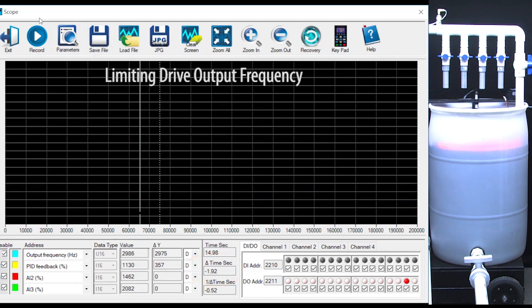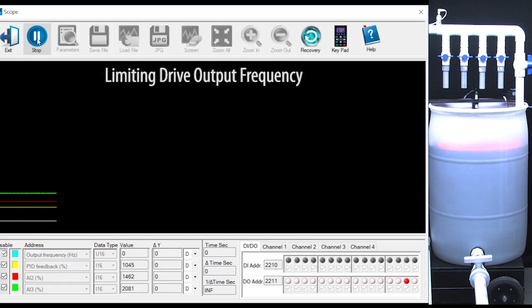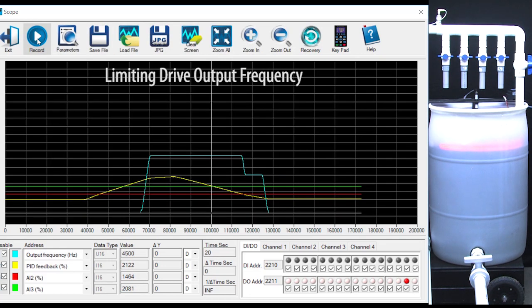And just like in the previous video, you can change the max PID frequency output. I set it to 75%, ran the drive and got this. Sure enough, the max output frequency is limited to 45 Hz, which is 75% of the drives max 60 Hz.